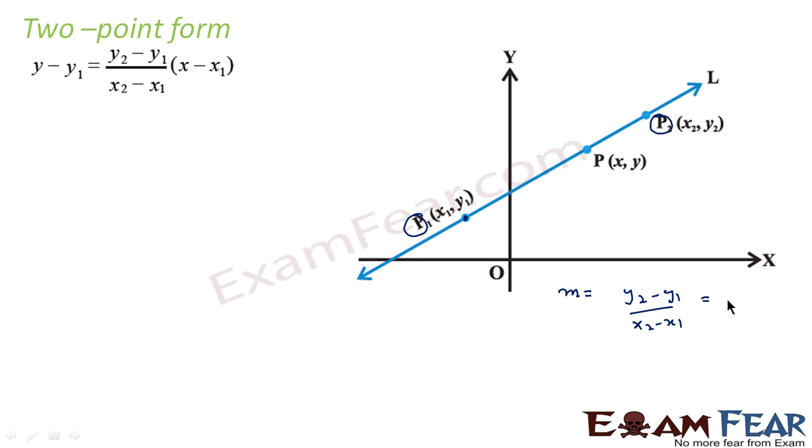Now also we can say slope is y minus y1 divided by x minus x1, since x, y is the general point on the line. So we can say it this way. So we'll equate these two.